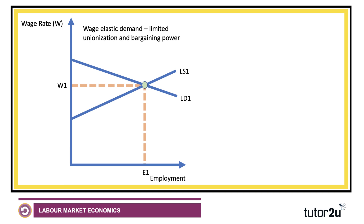Trade unions in this situation have relatively limited bargaining power, and assuming that unionisation is low — only a small percentage of people are members of a union — they might be able to negotiate their wage up to W2, but one of the effects might be that employment falls from E1 to E2. So trade unions typically have less bargaining power when the demand for labour is wage elastic and when employers can often find non-union employees if they need to control wage costs.